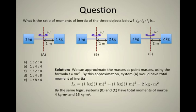I invite you to go through the same calculation for the other two objects here. The object B will have a moment of inertia of four kilogram meter squared and object C will have 16 kilogram meter squared as a moment of inertia.